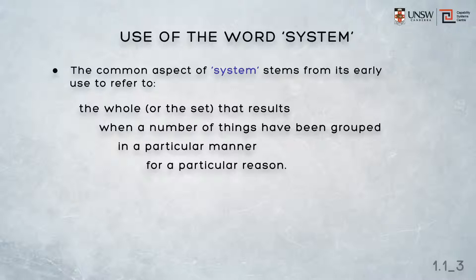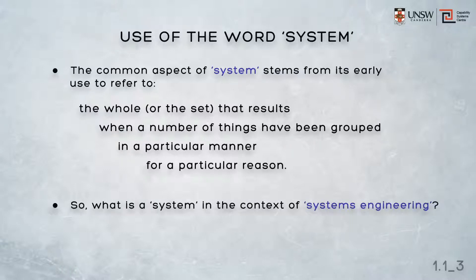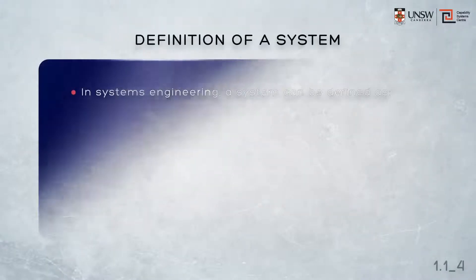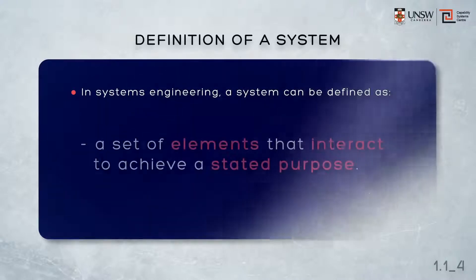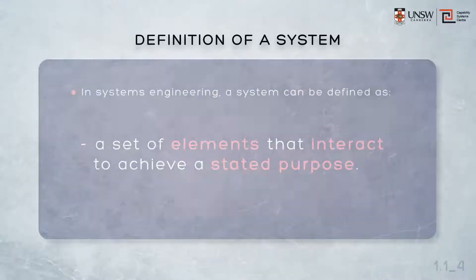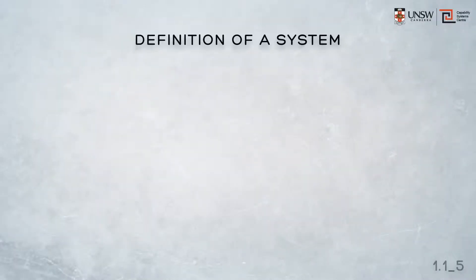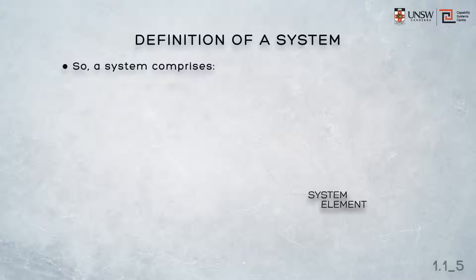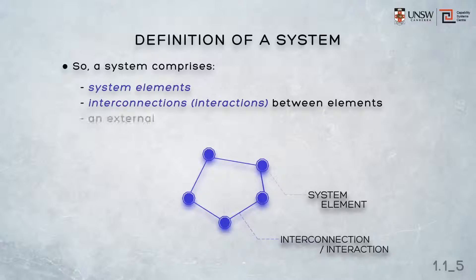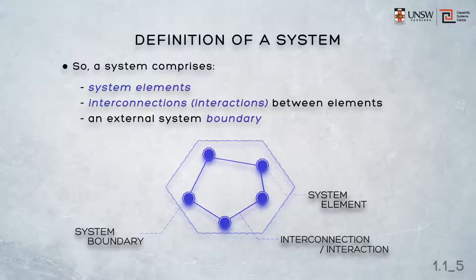So before we continue, we should briefly consider what we mean by a system in the particular context of systems engineering. In systems engineering, a system can be defined as a set of elements that interact to achieve a stated purpose. This definition implies that a system comprises system elements, with interconnections or interactions between those elements, and, by the very act of identifying the system that we're interested in, an external system boundary is also implied.